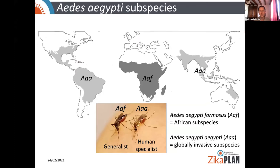The reason why it could have something to do with this mosquito is that Aedes aegypti consists of two subspecies: Aedes aegypti formosus, the African subspecies, which is a dark form primarily found in sub-Saharan Africa, and Aedes aegypti aegypti, the globally invasive subspecies, found in the tropics and sub-tropics of the rest of the world — in Asia and in the Americas. Aedes aegypti formosus is a generalist that breeds in a variety of urban and forest habitats, whereas Aedes aegypti aegypti is a human specialist that preferentially bites humans and breeds in the domestic environment.